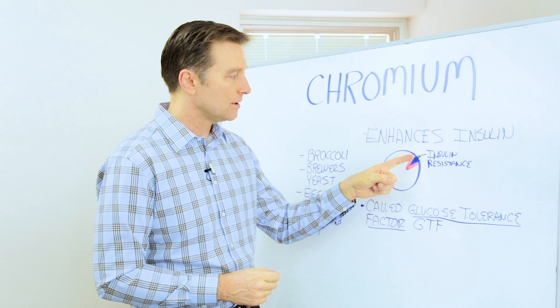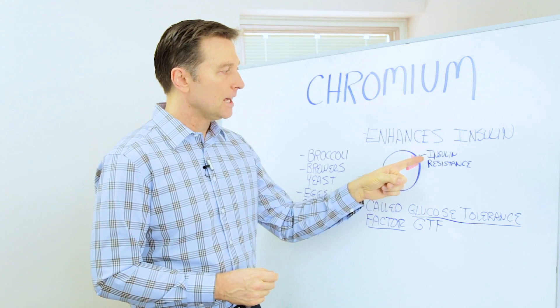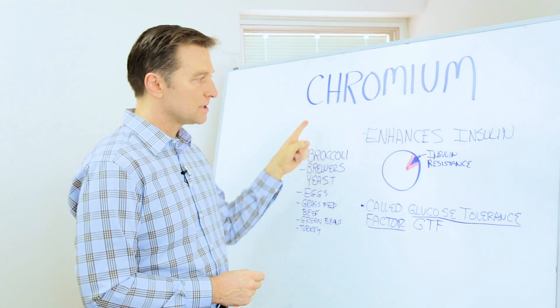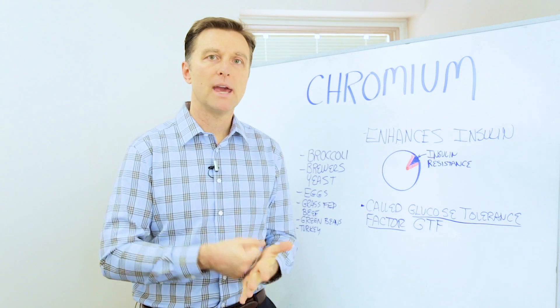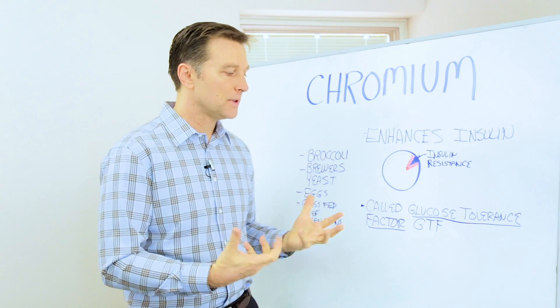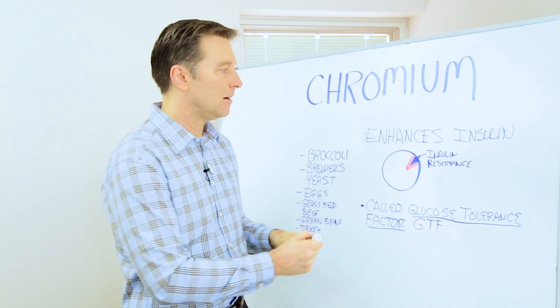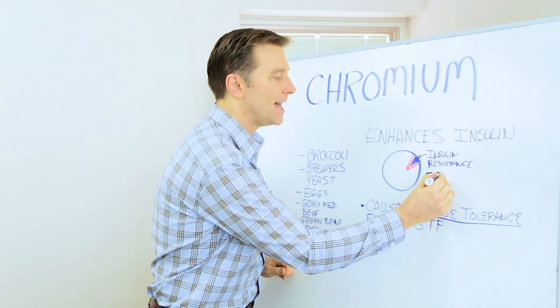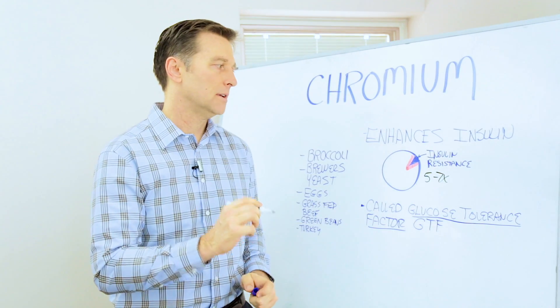Because what happens when the cells start resisting insulin, the feedback loops that go to the pancreas then tell the pancreas to make more insulin because it's not getting through. So people with insulin resistance have about five to seven times more insulin than a normal person.